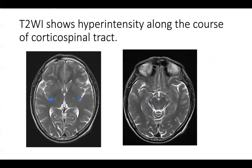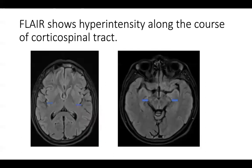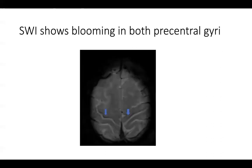This axial T2 cut section of MRI brain shows hyperintensity along the course of the corticospinal tract. This SWI imaging shows blooming in both precentral gyri, also known as the motor band sign.